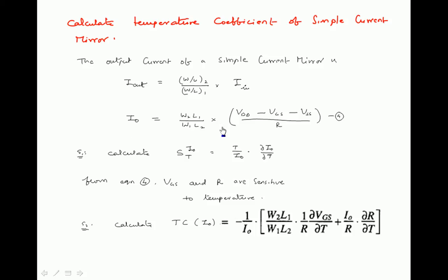Next, we calculate the temperature coefficient: Tc of I0 equals T divided by I0 times ∂I0/∂T. From the output current equation, we identify which parameters are temperature dependent. Among W, L, VDD, VGS, VSS, and R, only VGS and R are temperature sensitive — they change as temperature changes. The others remain constant.